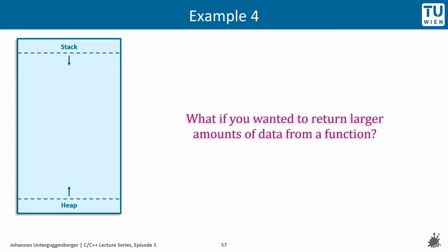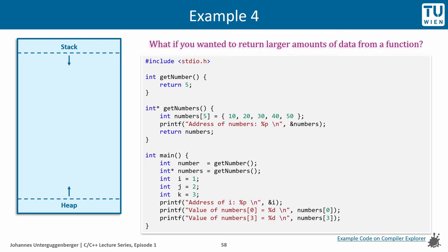Let's assume you wanted to return larger amounts of data from a function, like for example, an array of several integers. And here is an implementation that shall accomplish that, but unfortunately, it is incorrect. First of all, returning a single integer is straightforward, and can be handled with the function's return value. And here we see how one could attempt to return multiple integers, an array of integers from a function. Within the getNumbers function, an array is declared and is returned to the caller. Let us investigate what happens memory-wise in this example.